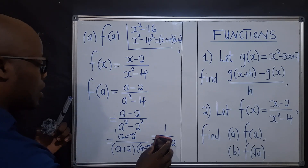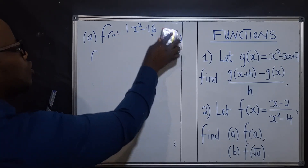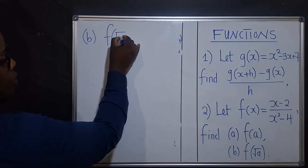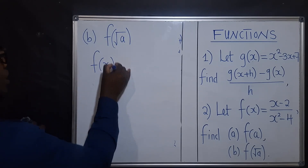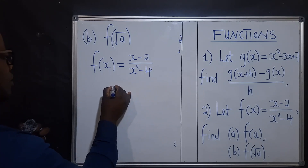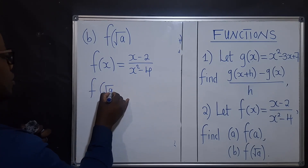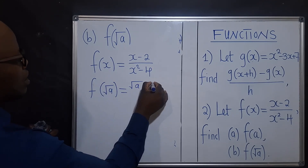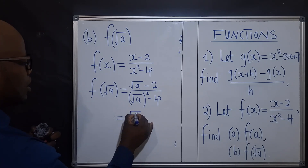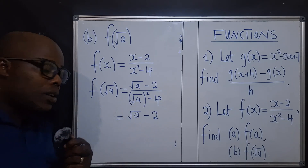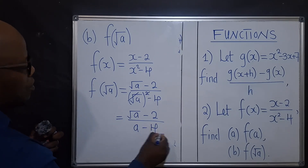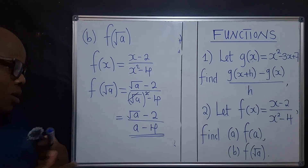We now go to question 2b. They want us to find f of square root of a. We know the function is the same one right here, so we just substitute. Where there is x, we substitute square root of a. So it becomes: square root of a, minus 2, over square root of a power 2, minus 4. This of course will just be square root of a minus 2 over a minus 4. So this is our answer. Some of you may be wondering what happened for this to cancel.